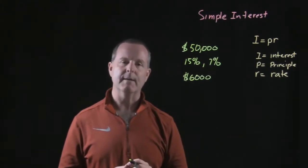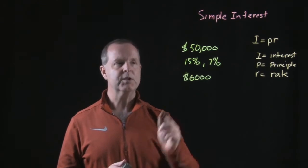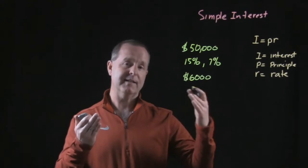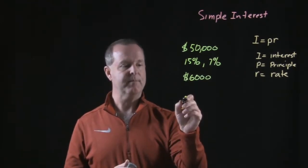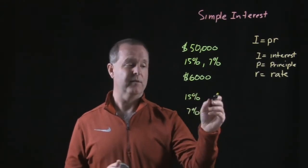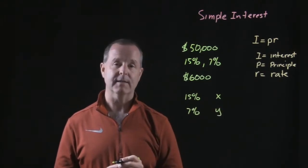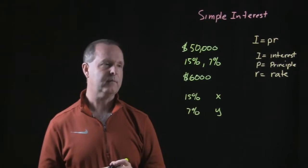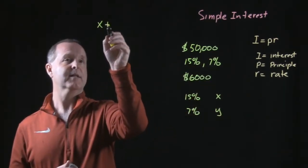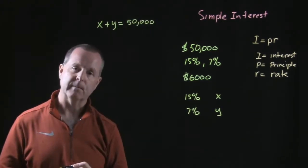We need to come up with two equations here. Let's start with the $50,000. We know we're going to put some money in one account and some money in another account. In my 15% account I'll put X amount, and I'll put Y amount in the 7% one. So X plus Y equals 50,000 — that's one equation ready to go.